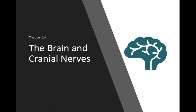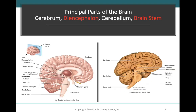Welcome back for our next lecture video covering the brain and the cranial nerves. The brain, along with the spinal cord, belongs to the central nervous system. In chapter 14 we'll go over the different parts of the brain and their functions. After covering the brain, we'll discuss the 12 cranial nerves. The brain can be divided into a few principal parts: the cerebrum, cerebellum, diencephalon, and the brainstem.